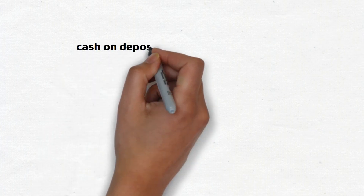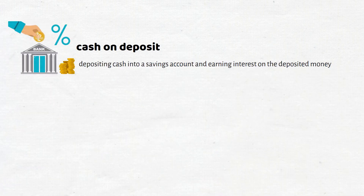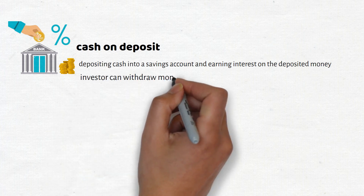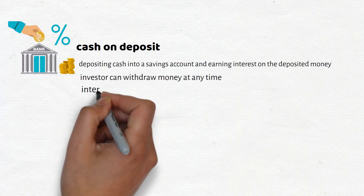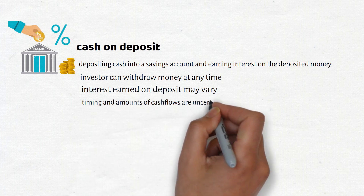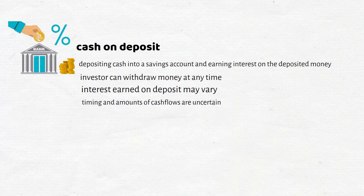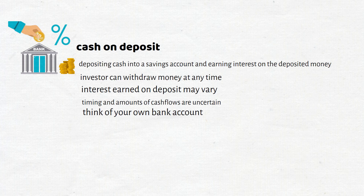Moving on to cash on deposit: this scenario involves an investor depositing cash into a savings account and earning interest on the investment. The investor has the flexibility to withdraw the money at any time. However, the interest on the investment is subject to change by the investment provider and may vary from day to day. As a result, the timing and amounts of the cash flows are uncertain. This scenario can be exemplified by a regular bank account.